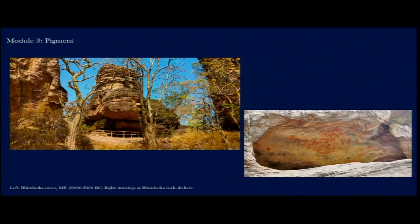We will start our discussion with some of the earliest surviving examples of these drawings, and they come from the rock shelters of Bhimbetka in Madhya Pradesh. The Bhimbetka caves are sandstone rock shelters — we should not be calling them caves, as you can see on screen. They are rock formations where, due to weathering and different climatic conditions, recessed areas were created in the rocks. They are not as deep as a cave can be, and those are the reasons why these formations are called rock shelters and not caves.